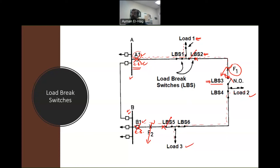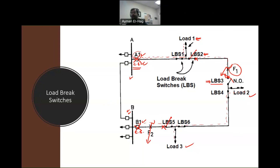Once the fault is safely isolated, we close the normally open switch LBS3. Now we can get power from the other bus — bus A — to feed loads 2 and 3. This is why it's important to design the system as a ring: in a purely radial system, a fault means no power until the fault is cleared, which could take days. The ring design with load brake switches gives us the flexibility to isolate any faulty section and restore power to all customers as fast as possible.